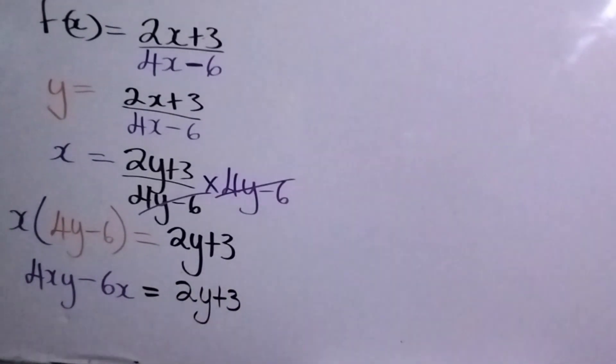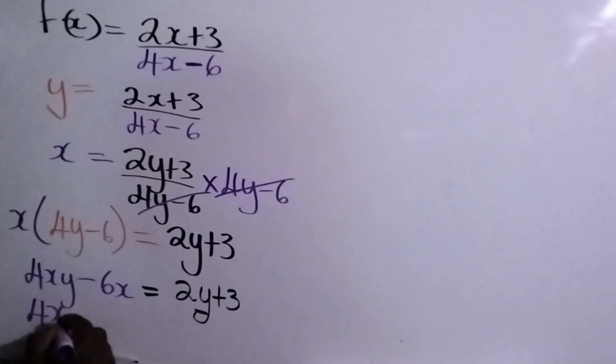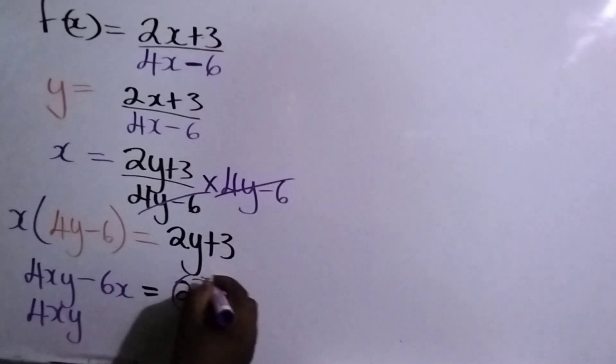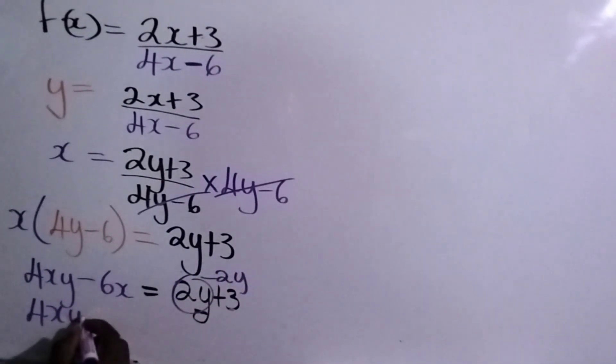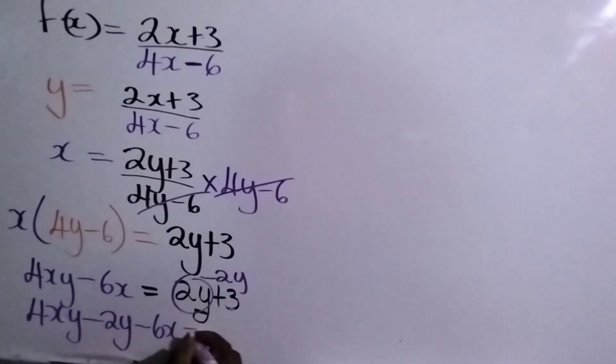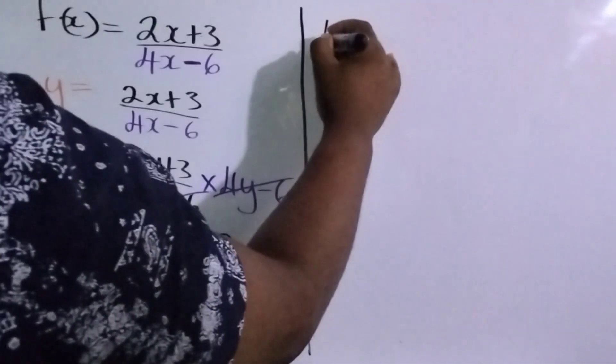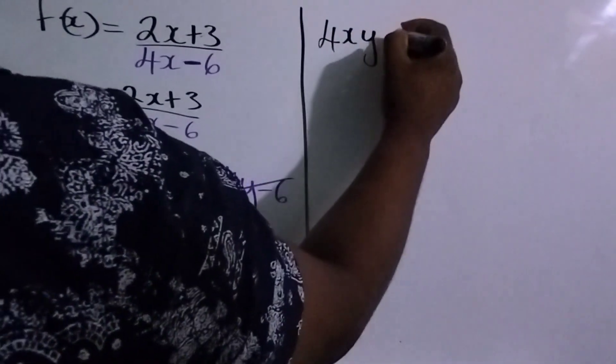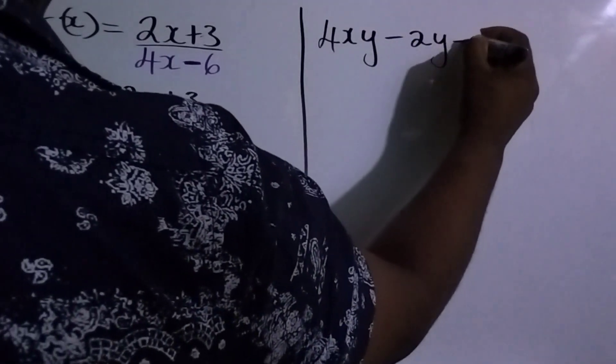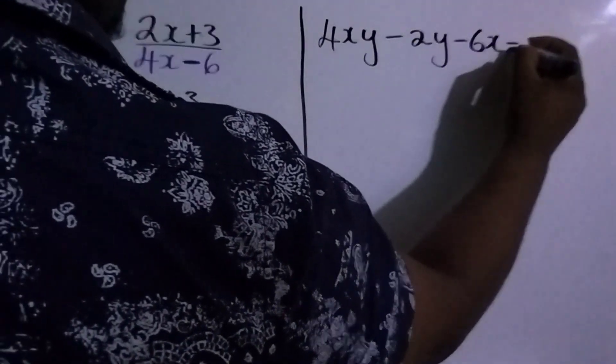So it's x times 4y, that will give us 4xy. X times minus 6, that is minus 6x, and that is equal to 2y plus 3. Remember our objective is to get all the y terms together, so we're going to group 2y with 4xy. So it's 4xy, this is a positive 2y, so the inverse would be minus 2y. So we minus 2y. We still have a minus 6x here and that would be equal to positive 3. So let's rewrite this.